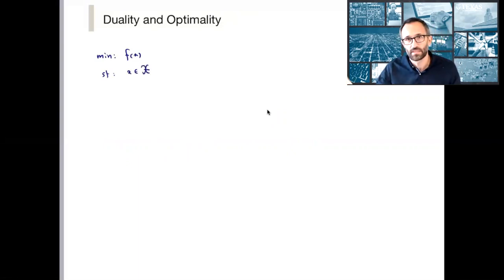Minimize f(x) subject to x in X. Again, everything in sight is convex. f is a convex function. Calligraphic X is a convex set. And we might as well make it be a closed convex set here, since we're optimizing.